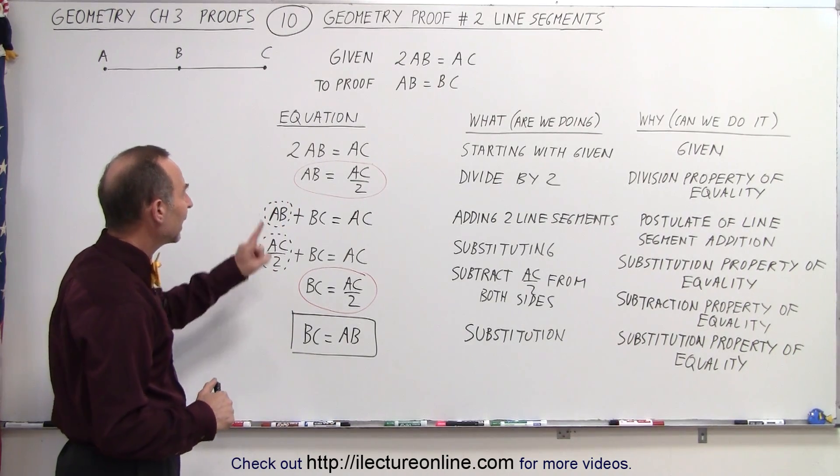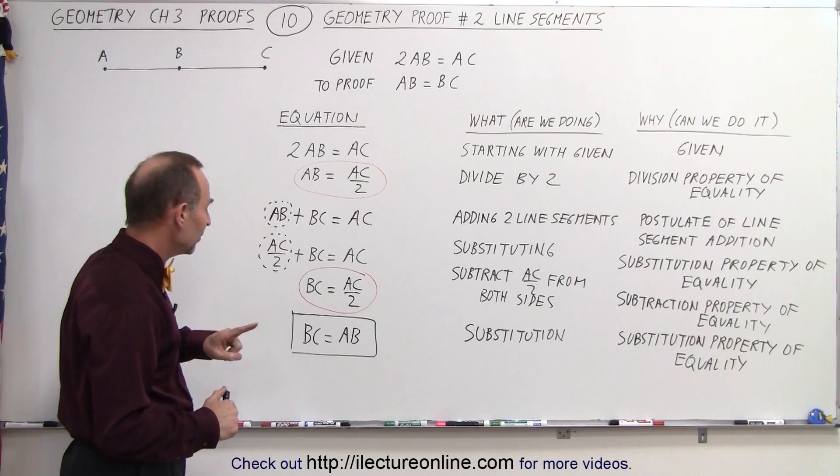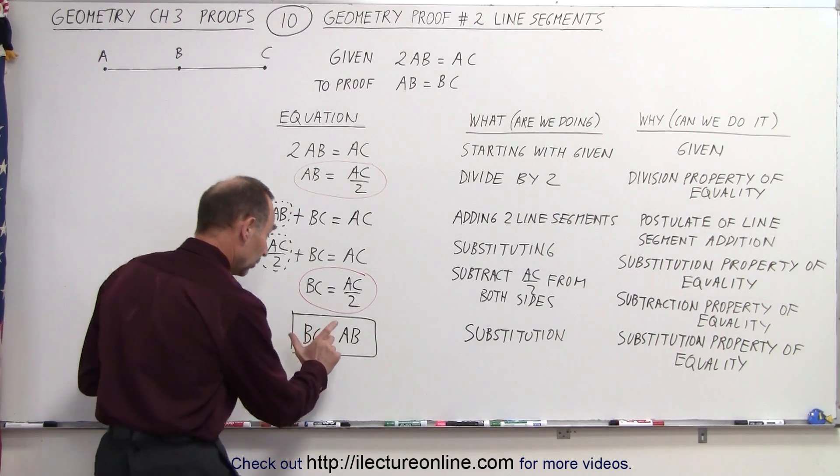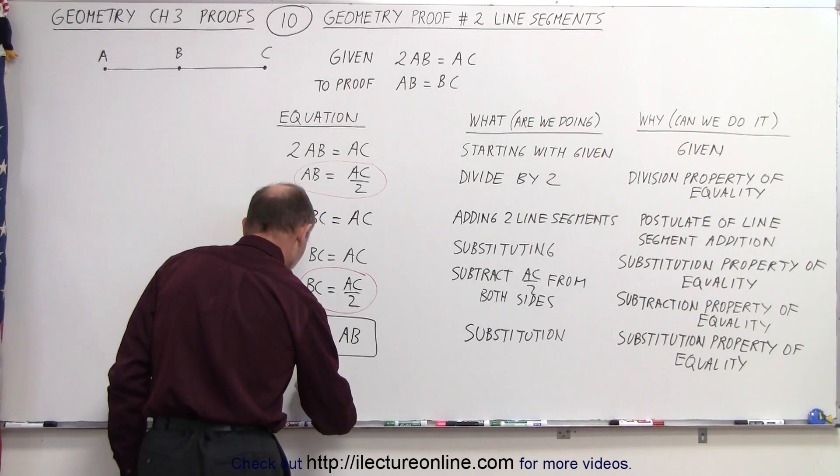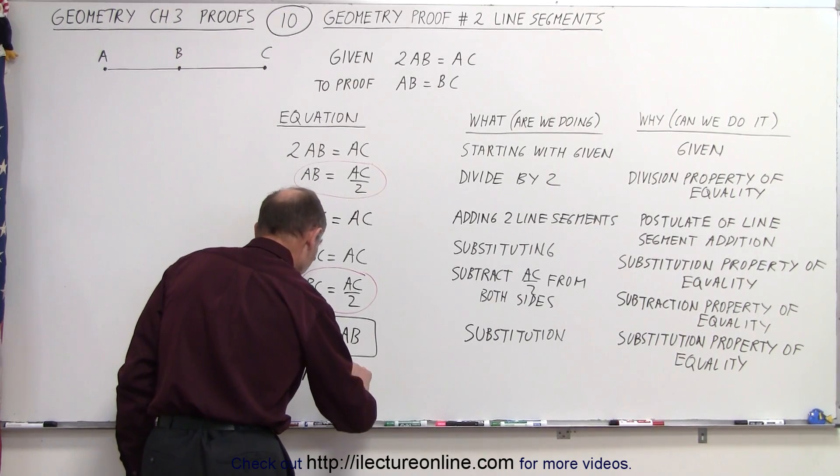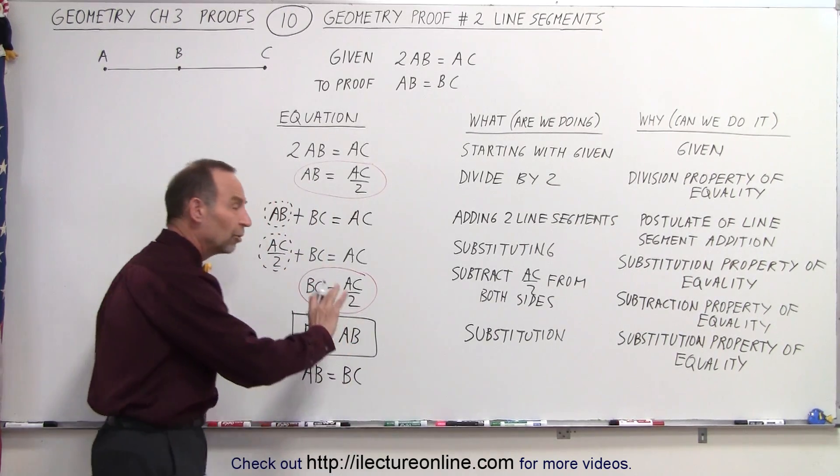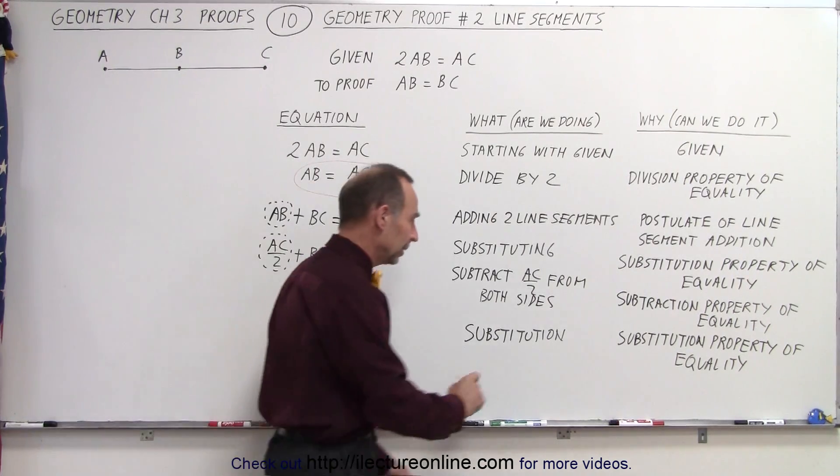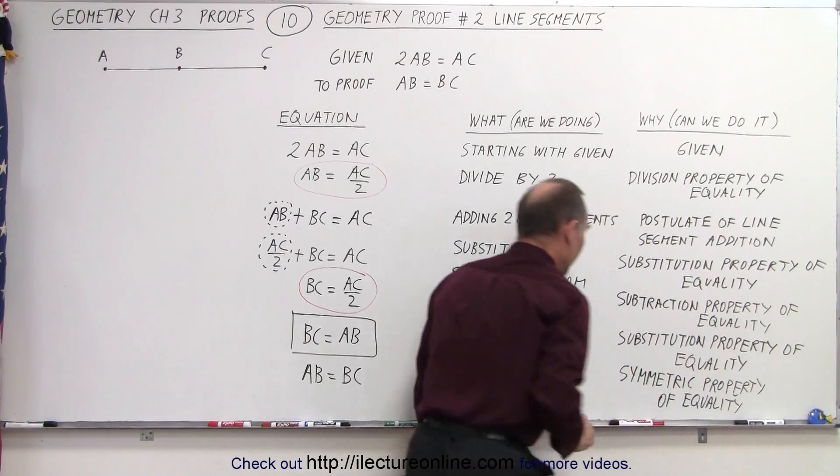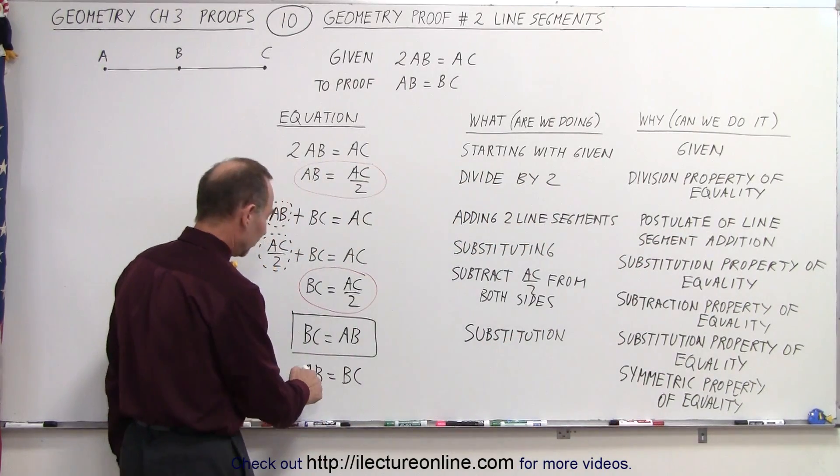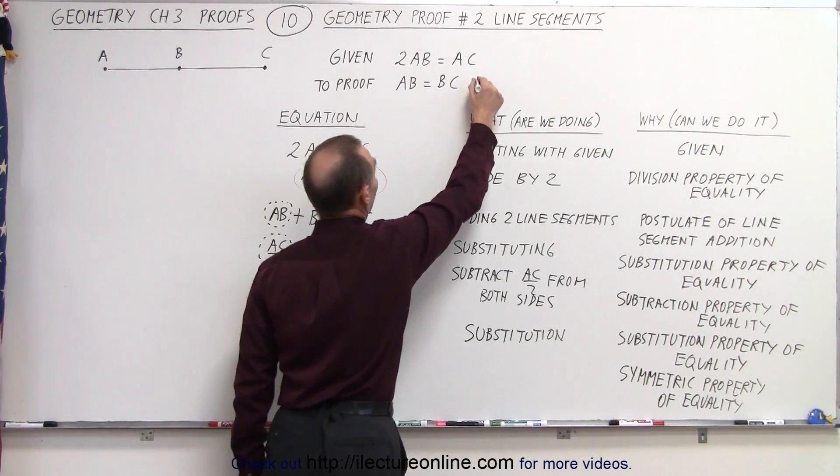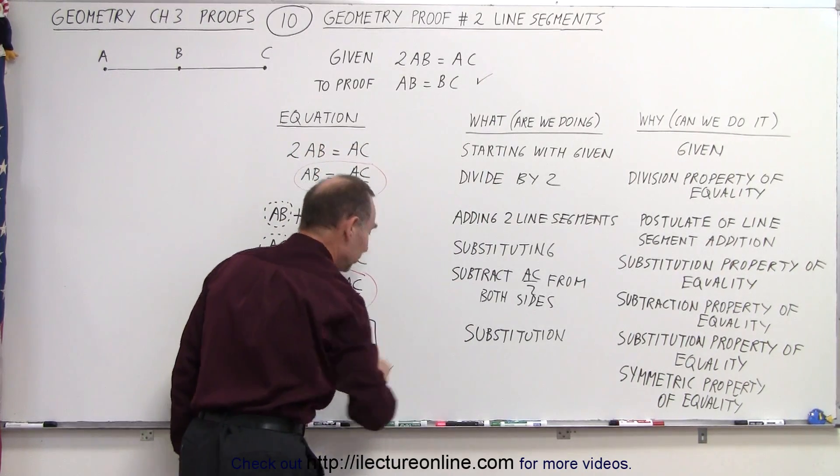Now, why do we know that AB equals BC is the same thing as BC equals AB? Well, because I can switch these around. I can write this as AB equals BC, and of course I need to justify that. I can justify that by the symmetric property of equality. By doing so, you can see that this now looks exactly the same format as what I was trying to prove. So we can say that, yes, indeed, I've proven that.